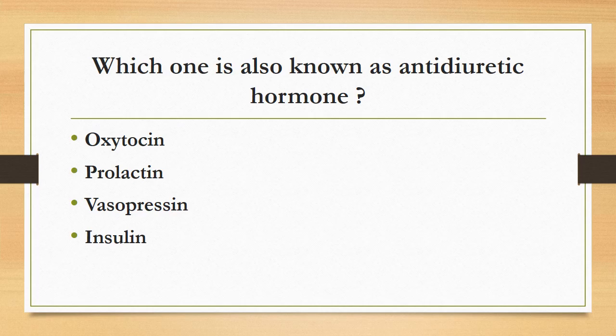Which one is also known as the anti-diuretic hormone? Oxytocin, prolactin, vasopressin, or insulin? The correct answer is vasopressin. Vasopressin is called the anti-diuretic hormone and is synthesized in the hypothalamus and released into circulation from the posterior pituitary gland.